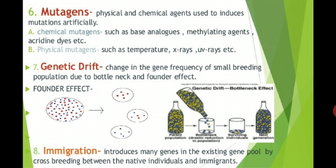The seventh source of genetic variability is genetic drift. Genetic drift is the change in gene frequency of a small breeding population due to the bottleneck or founder effect. You can see the effect of genetic drift illustrated in the figure.